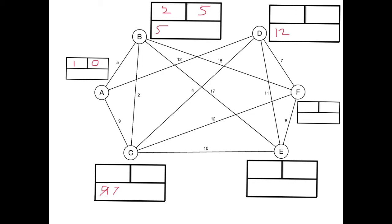I can get from B to F in 5 plus 15 is 20 and I can get from B to E in 5 plus 17 is 22. That's then B finished. I've looked at each of the different places we can get to from B.